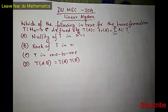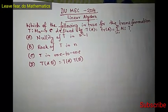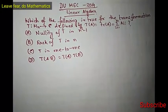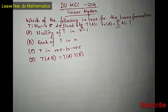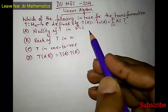Hello friends, welcome to my YouTube channel, Leave Fear Do Mathematics. Today we are going to discuss a problem from Delhi University MSc Mathematics entrance 2014. This is a problem of linear algebra. Before starting the video, if you have not subscribed to the channel, please subscribe. The problem asks which of the following is true for the transformation T from M_n to C defined by T(A) equals trace A equals summation i equals 1 to n of a_ii.